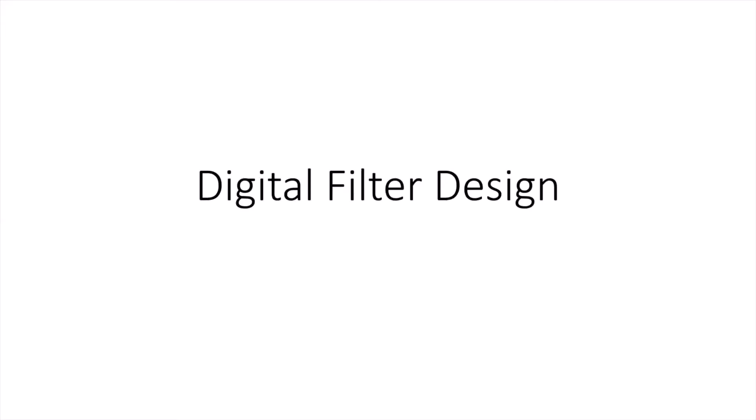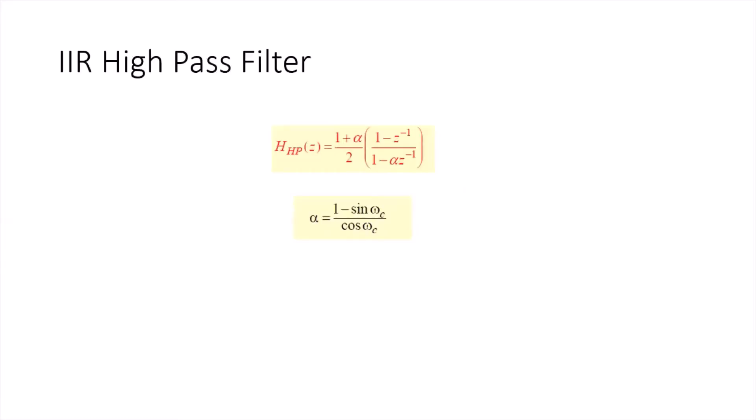Today, welcome you again to the lecture series of digital filter design. Today's topic is designing IIR high pass filter in MATLAB. What is IIR high pass filter? The idea is very simple, just like IIR low pass filter. We don't need to change the pole zero location like FIR. We just need to put one zero at z equals one.